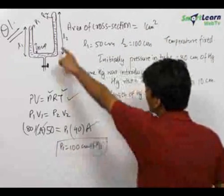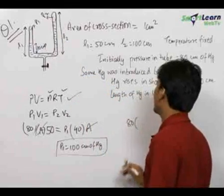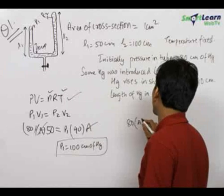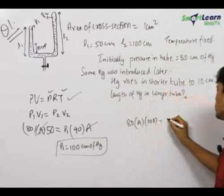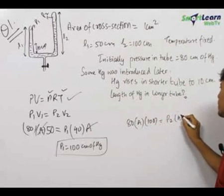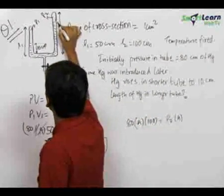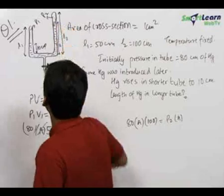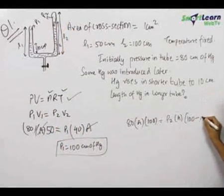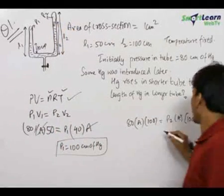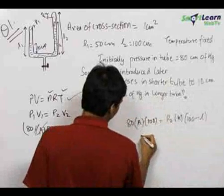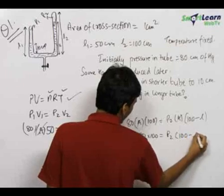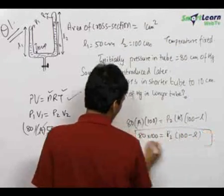Now applying the similar equation to the second tube: 80 times A times L2 equals P2 times A times (100 minus L), where L is the height to which mercury has risen in the longer tube. So we get: 80 times 100 equals P2 times (100 minus L). This is another equation in P2 and L.